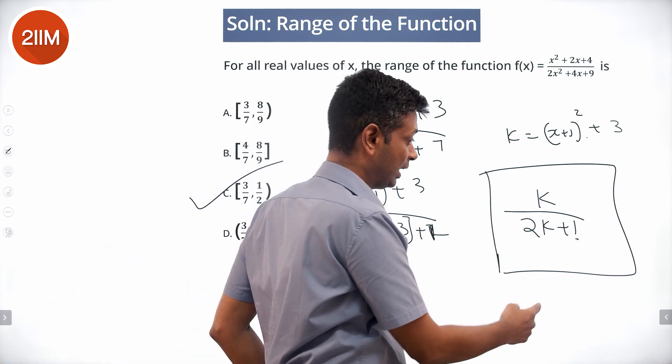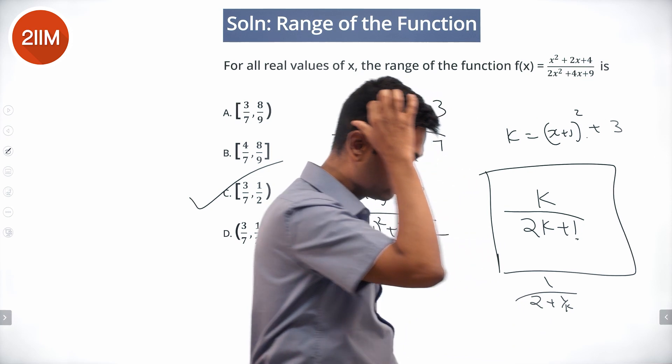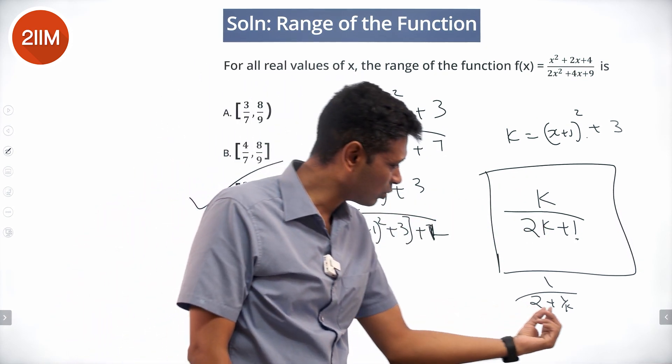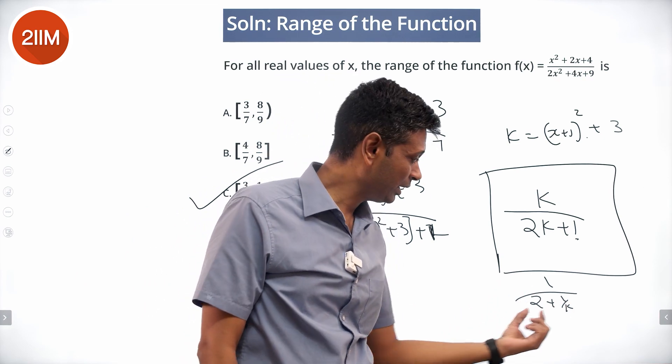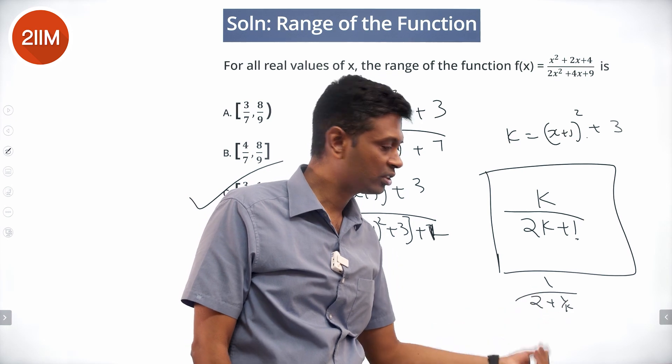You can even divide this by k and say 1 by 2 plus 1 by k. Dividing this entire thing, numerator by k, denominator by k. Effectively depends on 1 by k. If 1 by k is large, this fraction will be small. 1 by k is small, this fraction will be large.